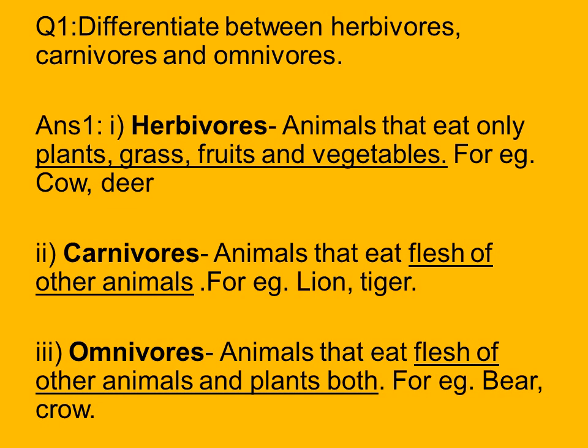A carnivore is an animal that eats the flesh of other animals — eating flesh is the main highlighting point of a carnivore. Examples are lion and tiger. Omnivores are animals that eat both flesh of other animals and plants. Examples are bear and crow — bear eats bamboo and grass but also eats fish. Even human beings are omnivores.